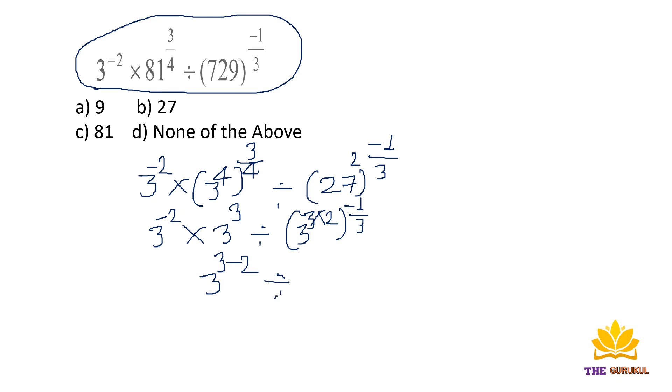Divided by 729, which is 27 squared, and to the power minus 1 by 3. So 3 to the power minus 2 times 3 to the power 3 divided by 27, which is 3 to the power 3, and this squared, 3 to the power minus 1 by 3.